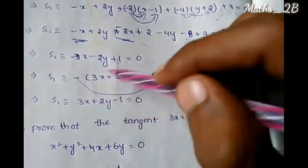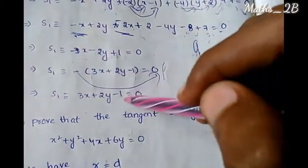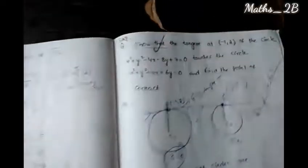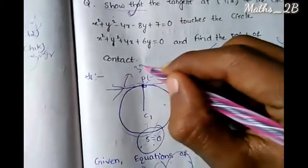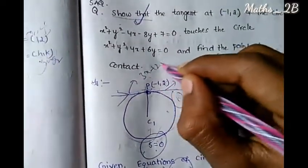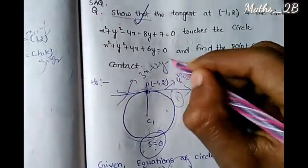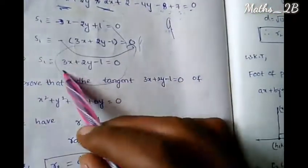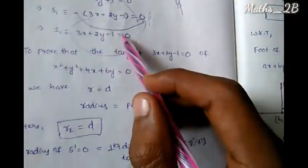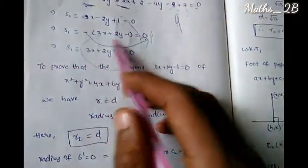Therefore S1 equals 3x plus 2y minus 1 equals 0. The equation of the tangent is 3x plus 2y minus 1 equals 0.